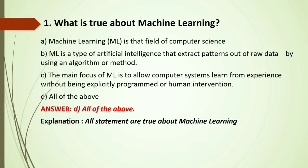MCQ: What is true about machine learning? Options: A) Machine learning is a field of computer science; B) Machine learning is a type of artificial intelligence that extracts patterns out of raw data using an algorithm or method; C) The main focus of ML is to allow computer systems to learn from experience without being explicitly programmed or human intervention; D) All of the above. Answer: All of the above. All statements in A, B, and C are definitions of machine learning and what machine learning exactly does.